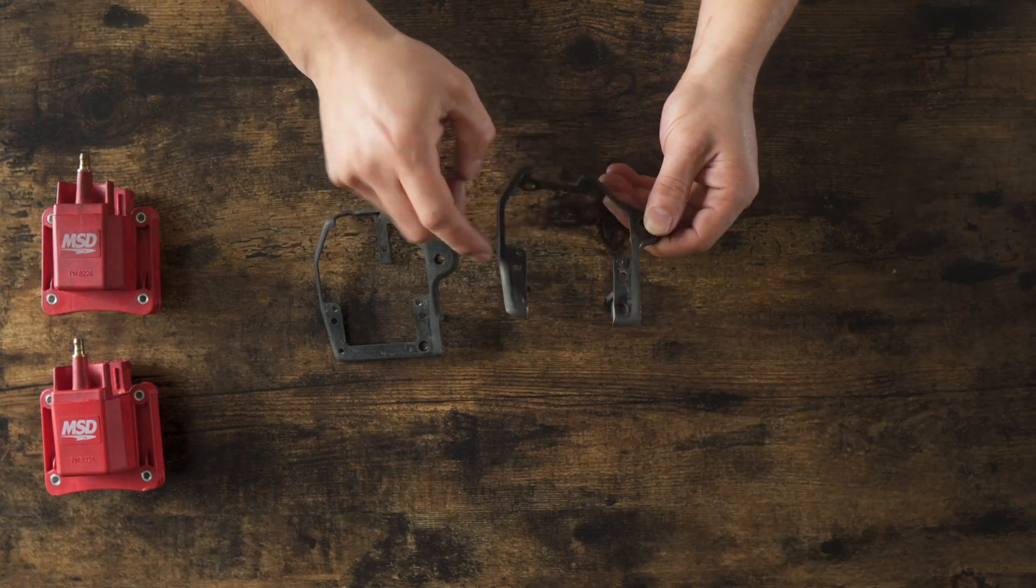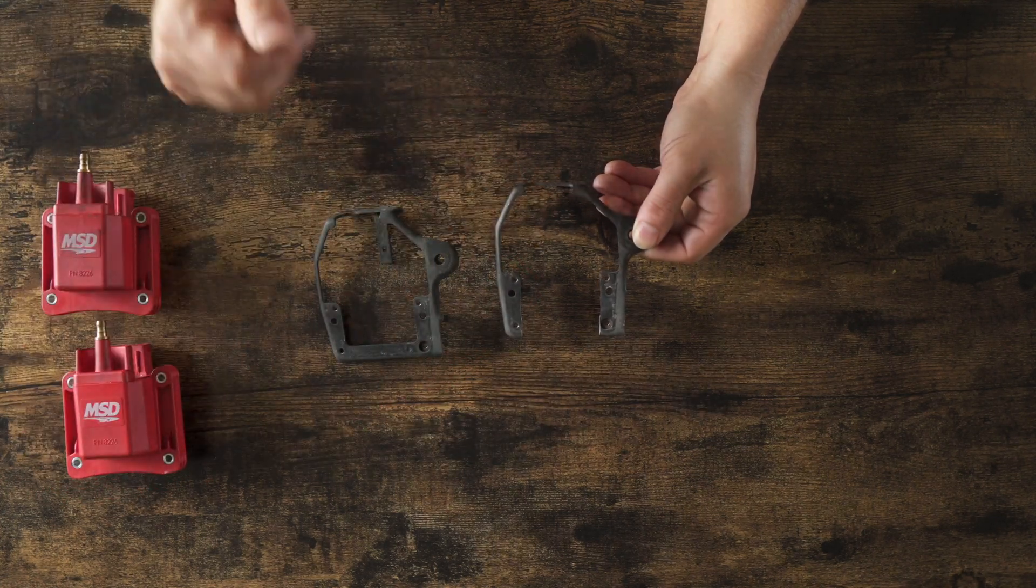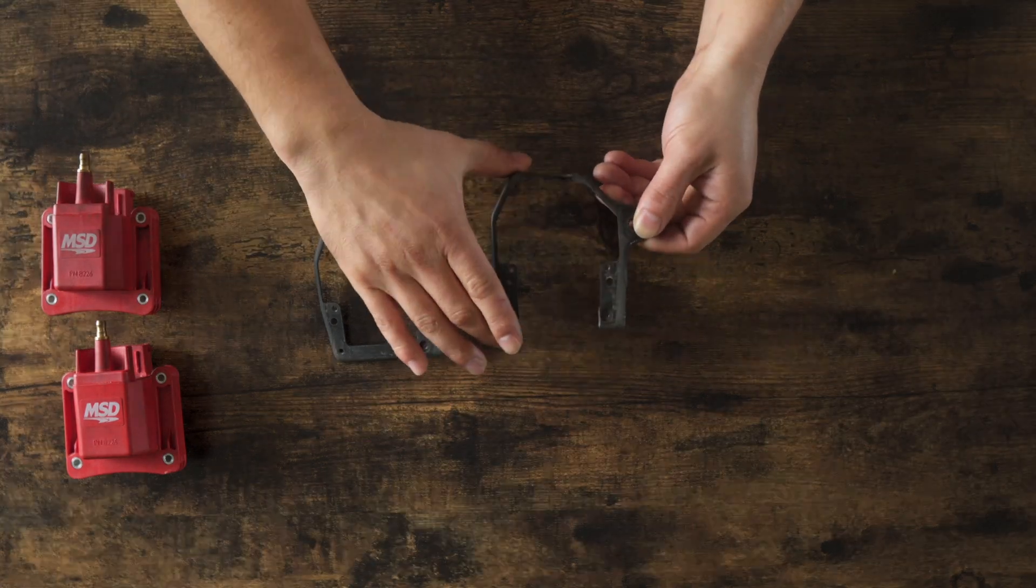This is a tab that holds the original connector that connects to the OEM ignition coil. You will have to get these cut and out of the way, so that way the coil is able to fit in this bracket. Nothing else needs to be modified, only this bracket here.